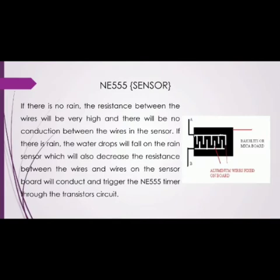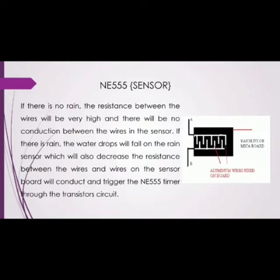Now here we can see the NE555 timer. If there is no rain, the resistance between the wires will be very high and there will be no conduction between wires in the sensor. If there is rain, the water drops will fall on the rain sensor, which will decrease the resistance between the wires, and the wire on the sensor board will conduct and trigger the NE555 timer through the transistor circuit.